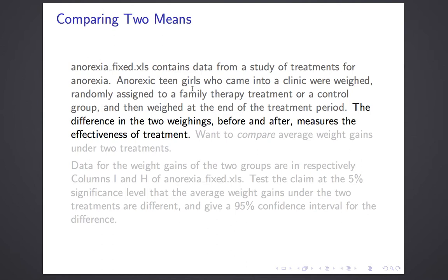We've talked about control groups before in the context of lurking variables. Girls coming into a clinic have recognized they have a problem and want help fixing it. They're eager to gain weight and cure their anorexia, and it may be that simply recognizing you have a problem and seeking help is beneficial in itself. Merely looking at weight gain would not tell you anything about the treatment unless you compare it to people not getting treated. If there's a difference between the treatment group and the control group, it can only be because of the treatment.